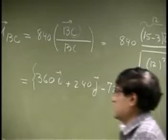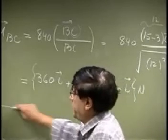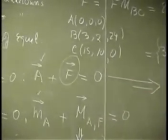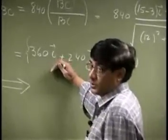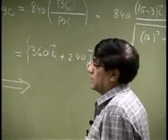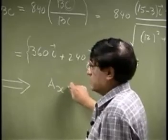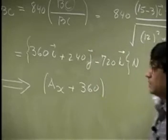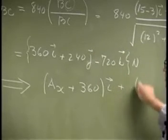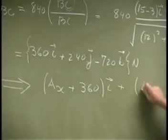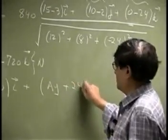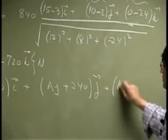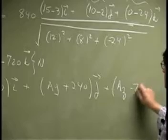So, if that is the force, then I should be able to write this equation. I mean, we need the reaction which is A, we add the force. Now, if I do that, then you get AX plus 360, and that's going to be times I, plus AY plus 240 times J, plus AZ minus 720 times K.